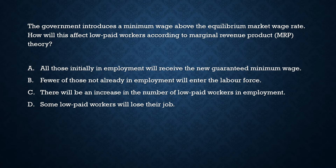We don't know if all those initially employed are low-paid, so option A is wrong. Option B — fewer of those not already in employment will enter the labor force — is wrong because even if they wish to enter, employment may not be available. Option C — there will be an increase in the number of low-paid workers in employment — is wrong because producers are not motivated to employ more people when the wage rate is very high. Option D — some low-paid workers will lose their jobs — is correct.